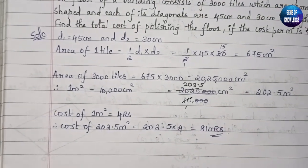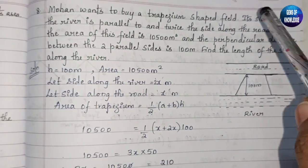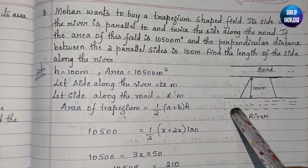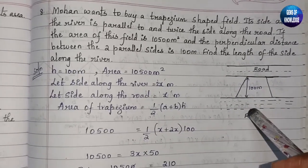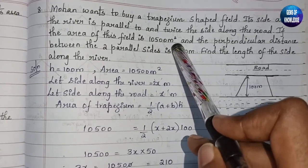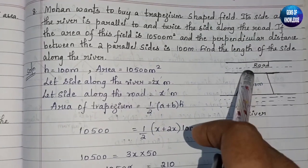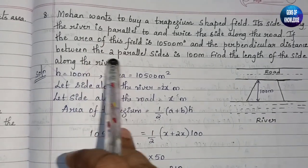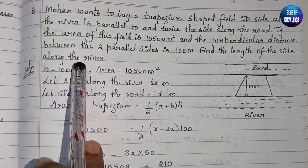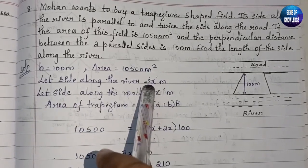Eighth question: Mohan wants to buy a trapezium-shaped field. Its side along the river is parallel to and twice the side along the road. The area of the field is 10,500 meter square, and the perpendicular distance between the two parallel sides — that is, the height — is 100 meters. Find the length of the side along the river.